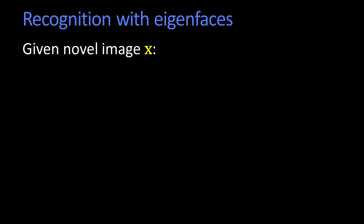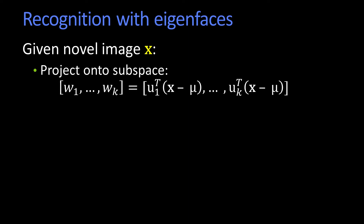So how do we do recognition? It's pretty straightforward. A new novel face image comes in, and all I do is project it into the subspace. Just like before, I subtract off the mean and I compute the dot product — the coefficients w1 through wk.